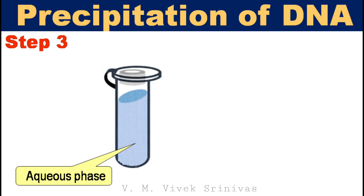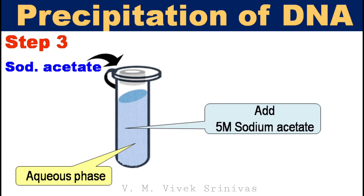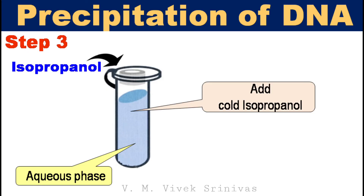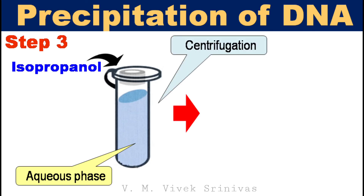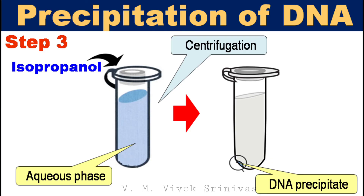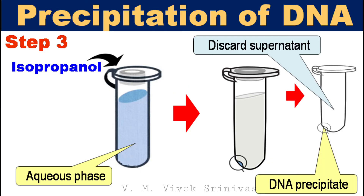In this step, first add 100 microliters of 5 molar sodium acetate to the supernatant and mix gently. Then add 2 ml of isopropanol and mix gently by inversion. After mixing, centrifuge at 5,000 RPM for 10 minutes to precipitate the DNA. Following precipitation, discard the supernatant.